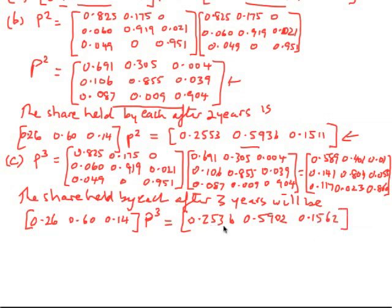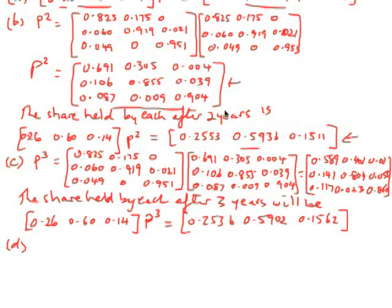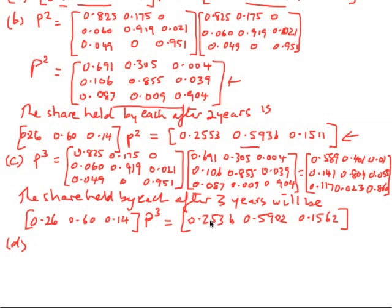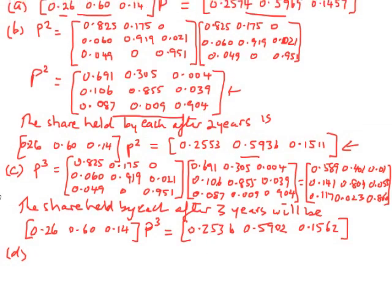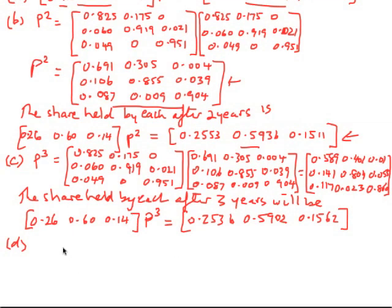After three years, the share is 25.36% oil, 59.02% gas, and 15.62% electric. Part D now—you can see these don't change very much from one year to the next. In fact, the larger the number of years, the more these will stabilize, converging to a certain market share that stabilizes the market.